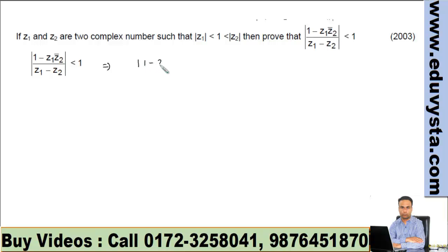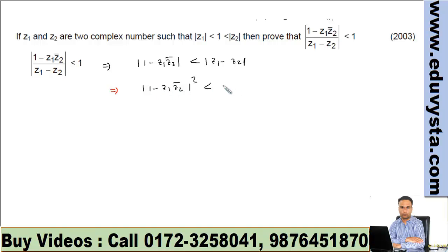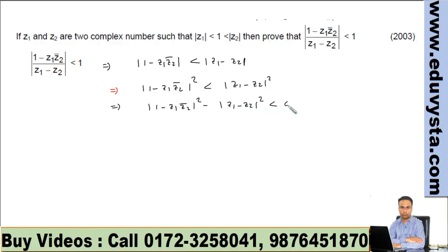Equivalently, we have to prove that the modulus of (1 minus z1 z2 conjugate) is less than the modulus of (z1 minus z2). Squaring both sides, that is: mod(1 minus z1 z2 conjugate) squared is less than mod(z1 minus z2) squared. So we need to show that mod(1 minus z1 z2 conjugate) squared minus mod(z1 minus z2) squared is less than 0.